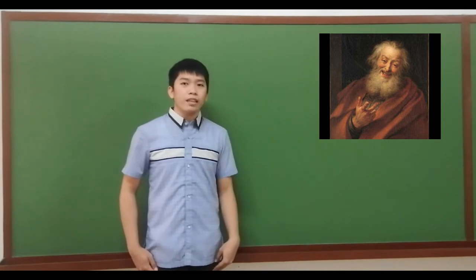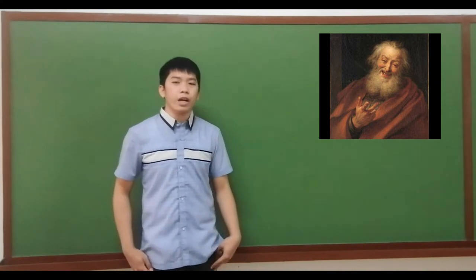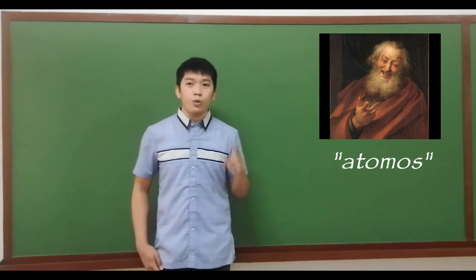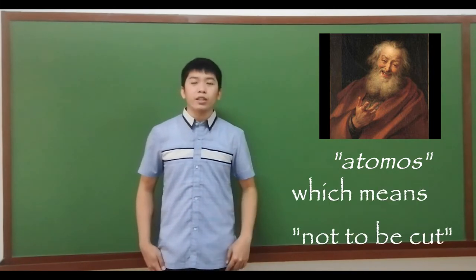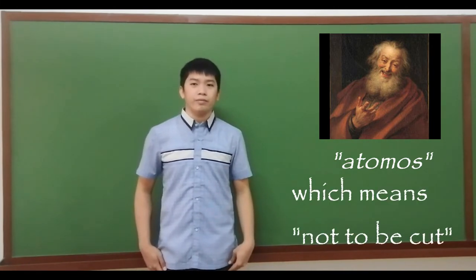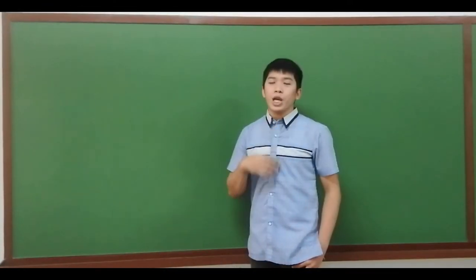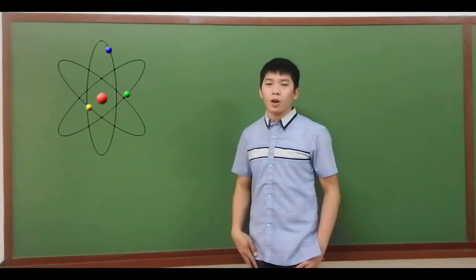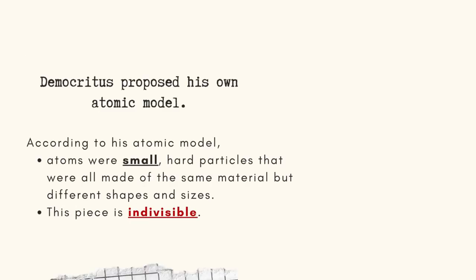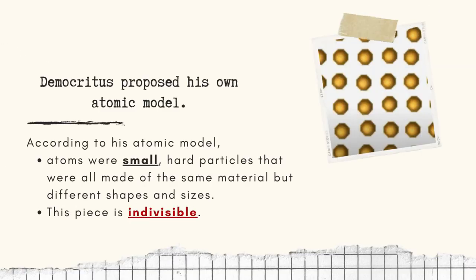Democritus named the smallest piece of matter atoms, which means not to be cut. Democritus proposed his own atomic model. According to his atomic model, atoms were small, hard particles that were all made of the same material, but different shapes and sizes. This piece is indivisible.